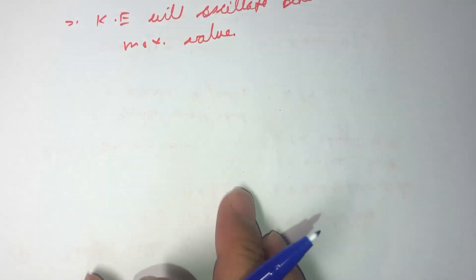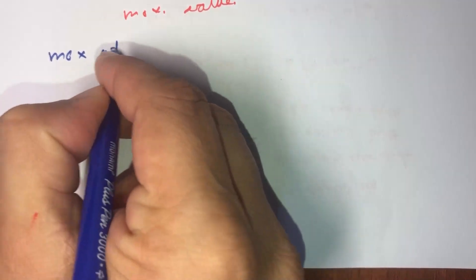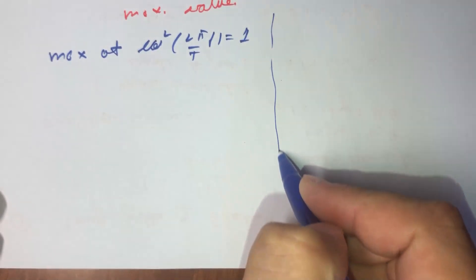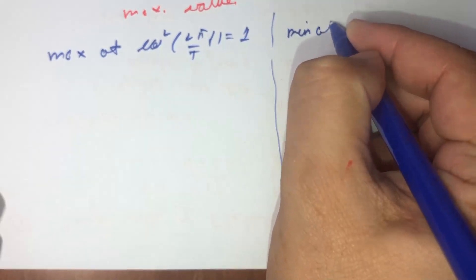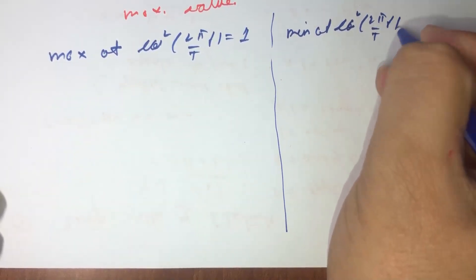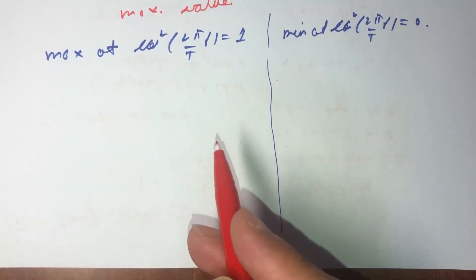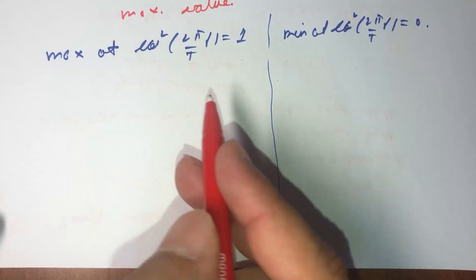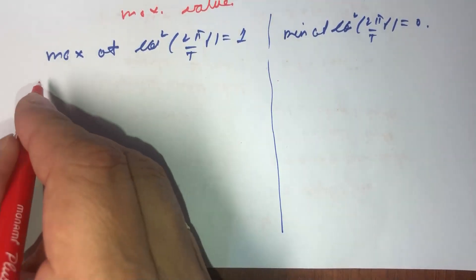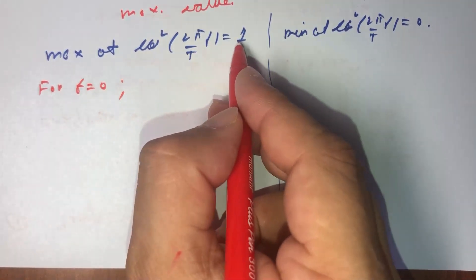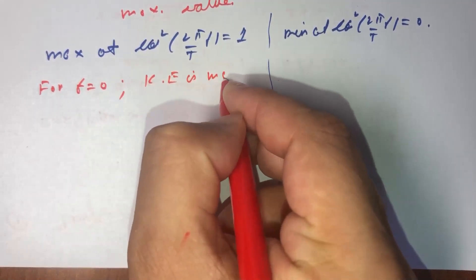Let us find out when this cosine function will be maximum and when it will be minimum. The maximum occurs when cos(2πt/T) equals 1, and the minimum when it equals 0. For t equals 0, cosine of 0 equals 1, so kinetic energy is maximum.